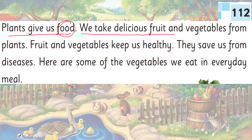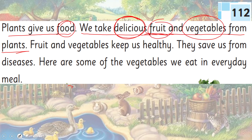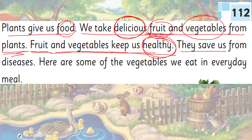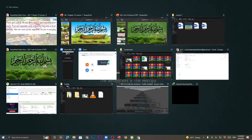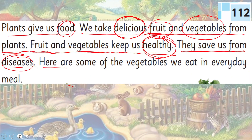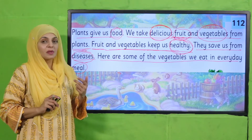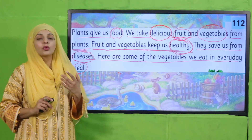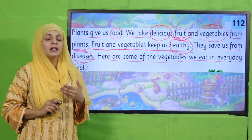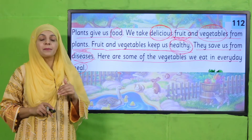Plants give us food. We take delicious fruits and vegetables from plants. Fruits and vegetables keep us healthy — they save us from diseases. Here are some of the vegetables we eat in every meal. Vegetables and fruits make us healthy. We use many fruits and vegetables in our daily diet.